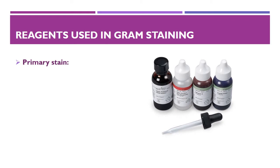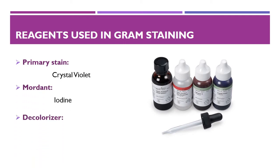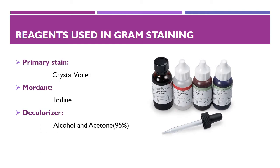Reagents used in gram staining: the primary stain is crystal violet dye; the mordant is iodine; the decolorizer is 95% alcohol and acetone; and the last is the counter stain, also called secondary stain, which is safranine.